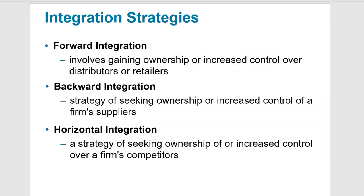Forward integration is really about trying to become more of a vertical business — gaining ownership or control of other elements of your business. If you're a retailer, maybe you want to start buying a manufacturer so you can control the manufacturing of your goods as well. Think about the Apple Store — why did Apple do a forward integration and gain ownership of retail stores? At the time, most retailers were selling mostly only PC products. So in order to get Apple products closer to customers, Apple took matters into their own hands and opened their own retail division to help increase their distribution.